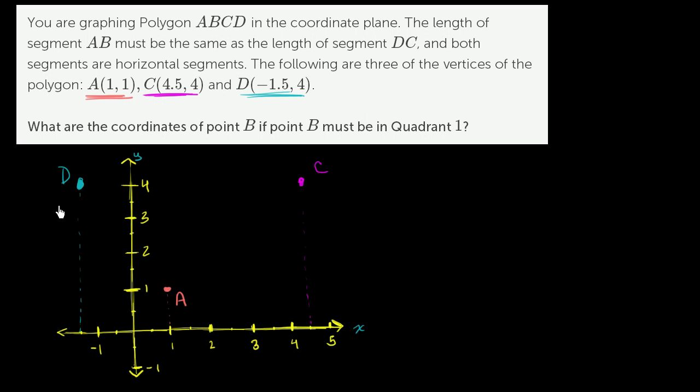We need to figure out what are the coordinates of point B if B must be in quadrant 1. The distance from A to B must be the same as the length of segment D to C, and both are horizontal. So let's draw what we know.